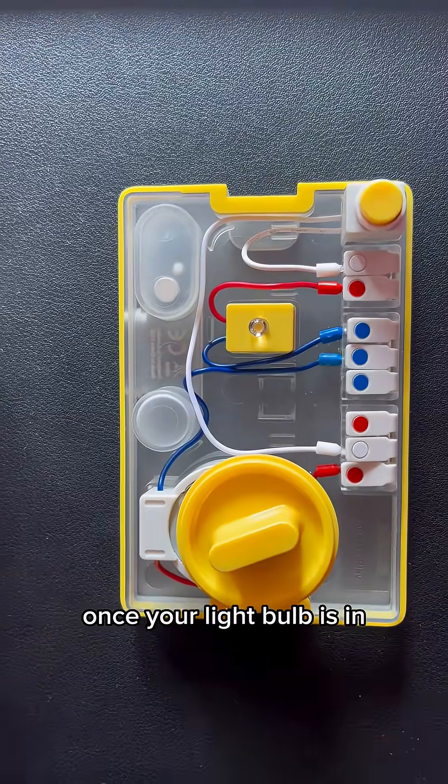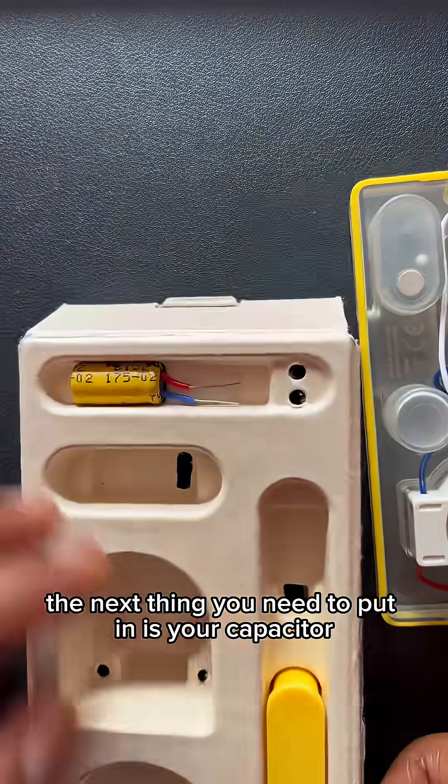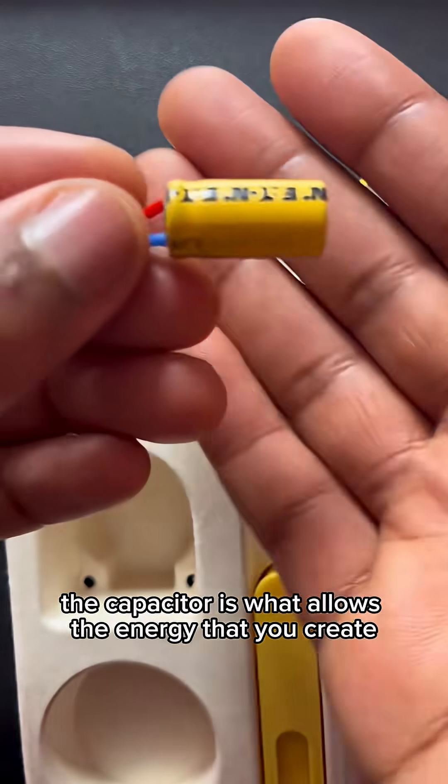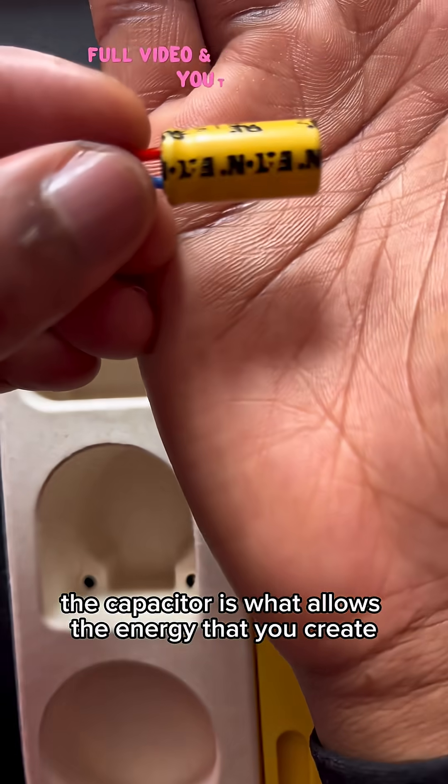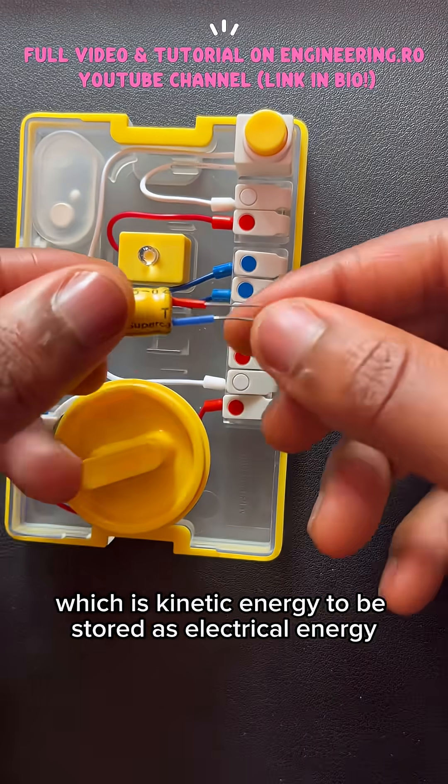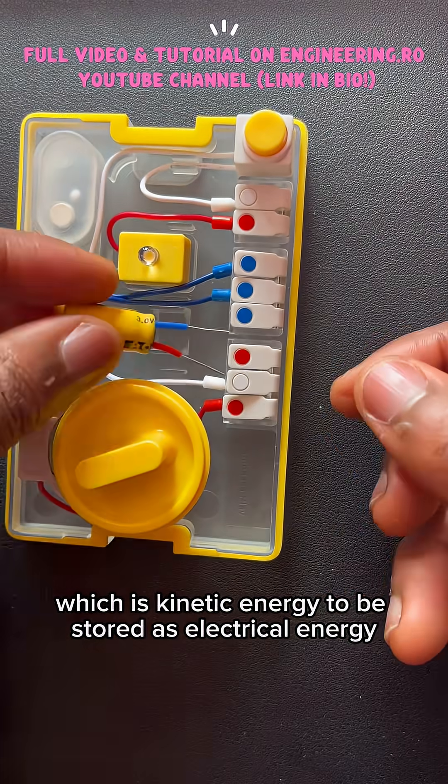Once your light bulb is in, the next thing you need to put in is your capacitor. The capacitor is what allows the energy that you create, which is kinetic energy, to be stored as electrical energy.